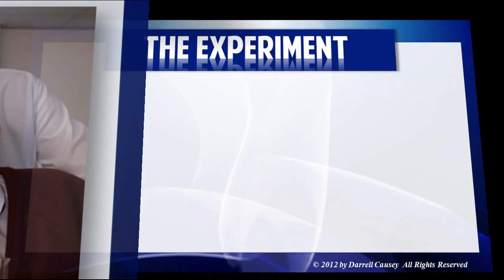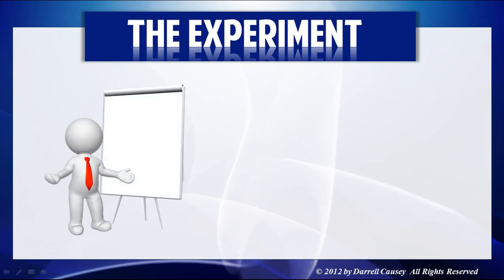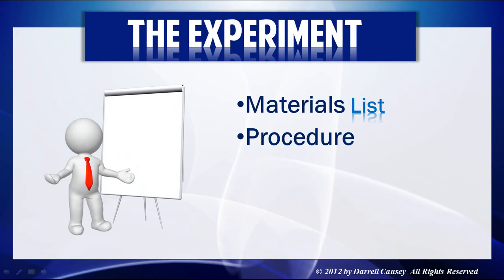You need to design an experiment, which means putting together your materials list, coming up with your procedure, writing it out, and keeping track every time you change something. This is where the lab notebook becomes indispensable to the scientist. You also need a place in your lab book to collect data — and the more data, the better your experiment and conclusions will be.